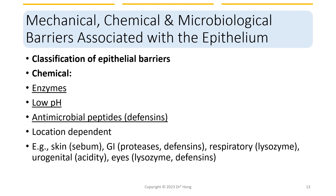The second type of barrier on the epithelia are chemicals, such as enzymes, low pH, and antimicrobial peptides such as defensins. They are spread across different locations of the body. For example, in the skin we have sebum, which contains antimicrobial peptides. In the GI tract we have proteases, which are enzymes that help digest protein components of invading organisms. In the respiratory system and eyes we have lysozymes, which provide a basic function to destroy bacteria. In the urogenital area, we have the acidity from urine, which provides a lower pH unfavorable for pathogen growth.